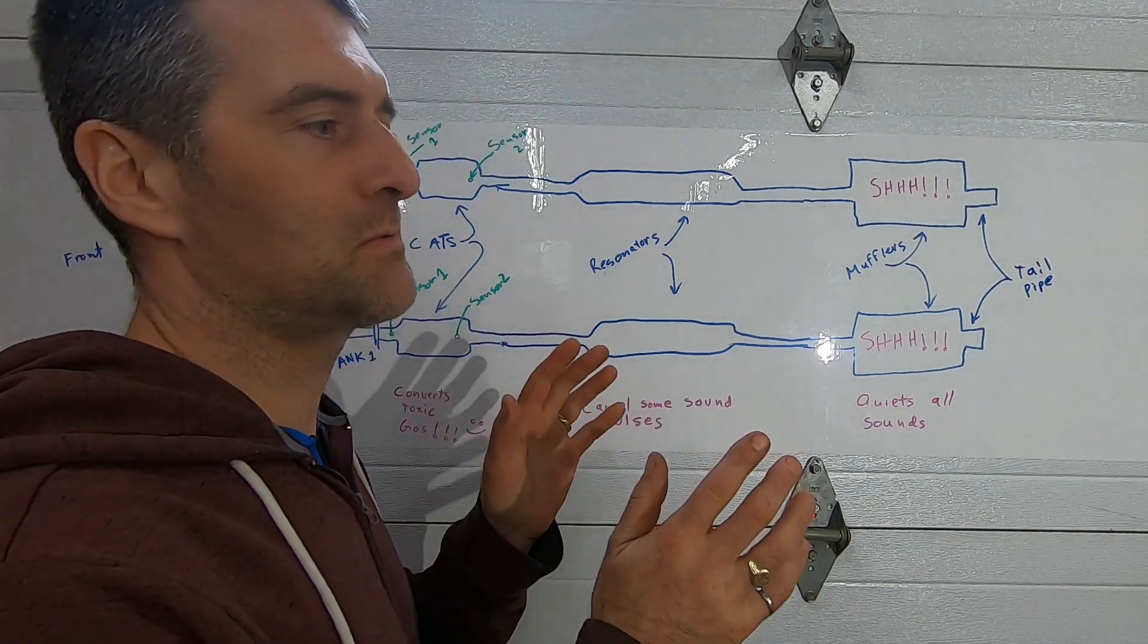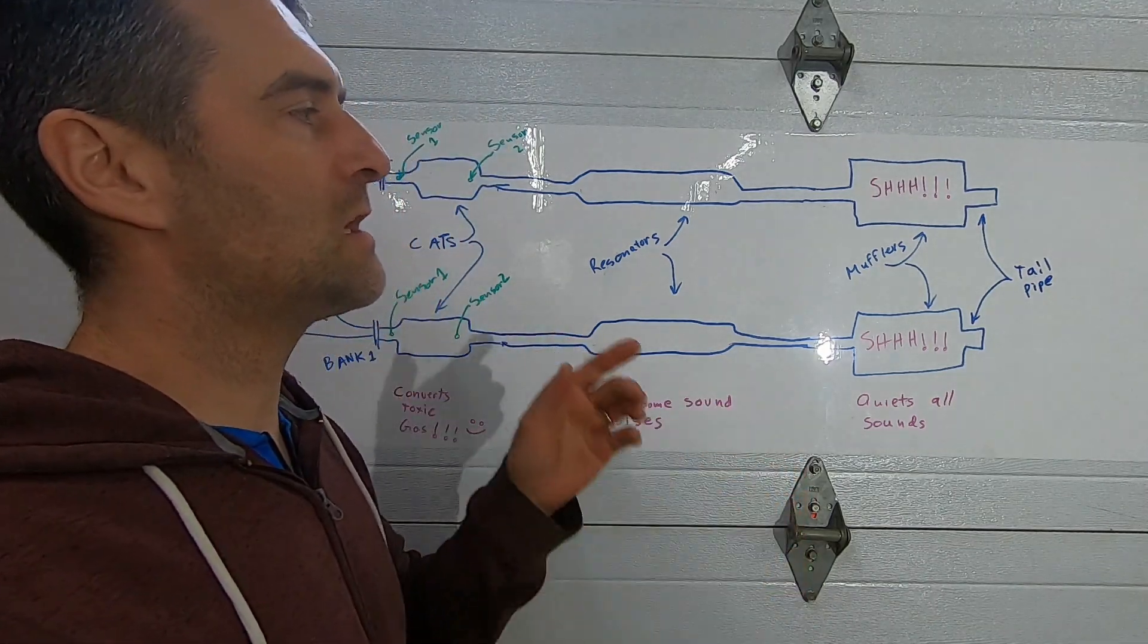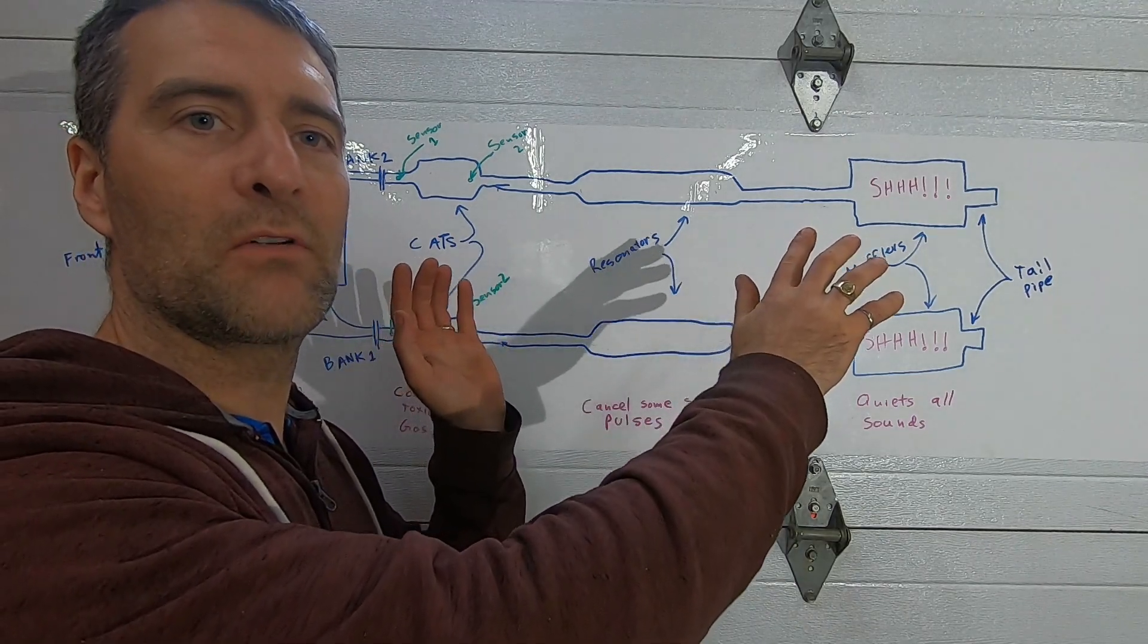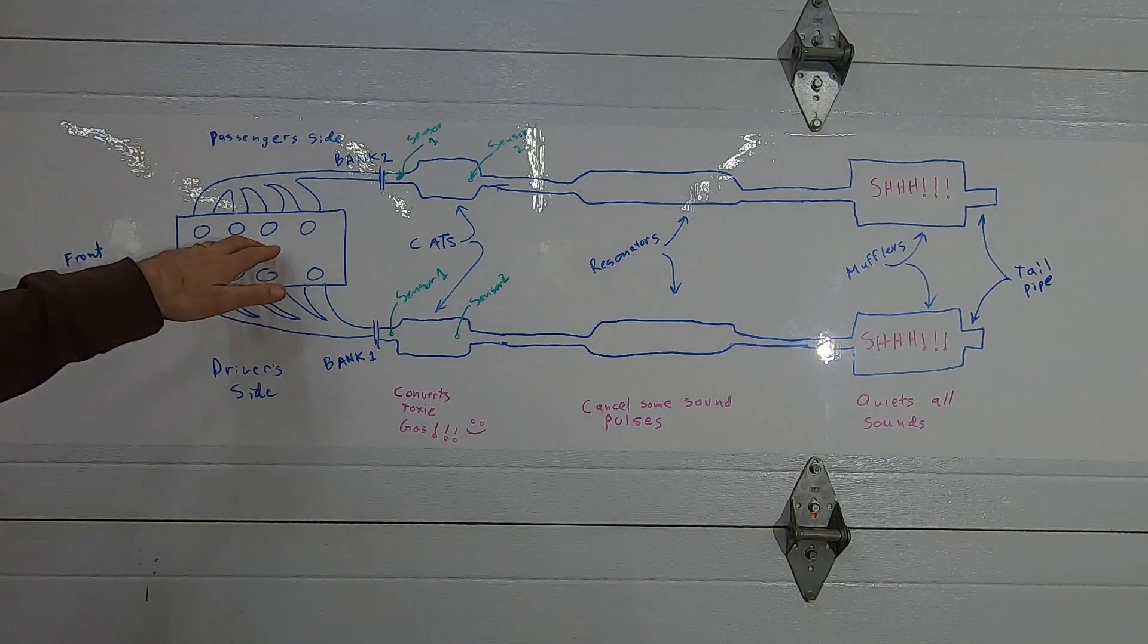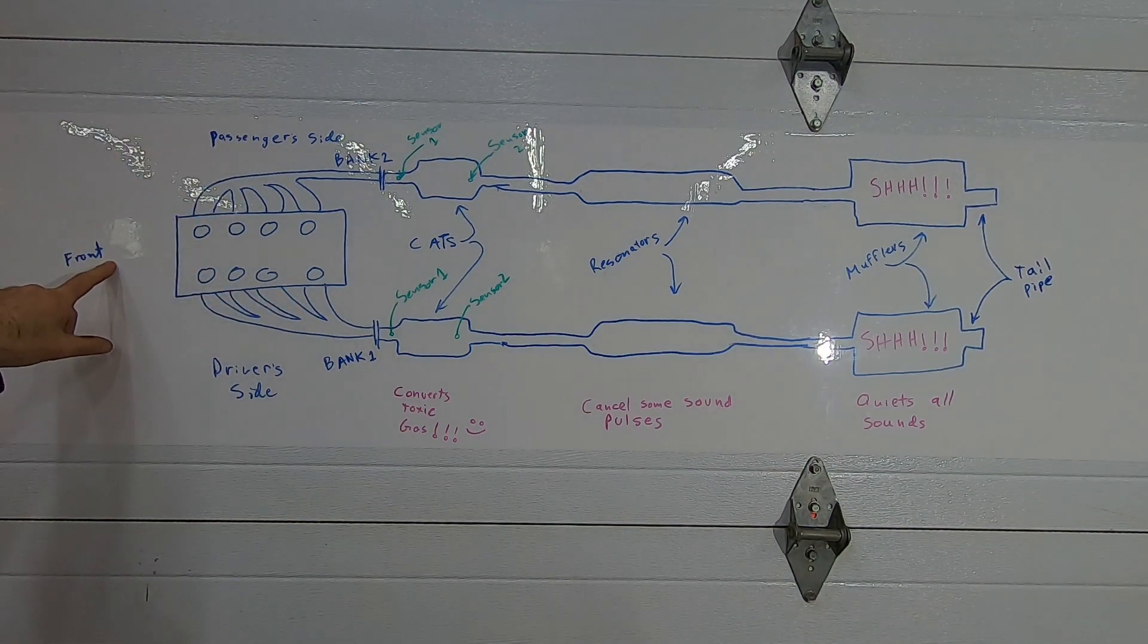Before we get into how to troubleshoot those catalytic converter issues, let's talk about where the catalytic converter fits within the exhaust system. Here we have an engine block for a car, this is the front of the engine or the front of the vehicle.